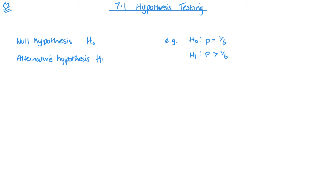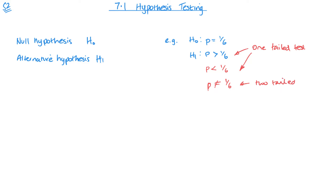This is called a one-tailed test — I'm only looking at one side. If I had p < 1/6, this would also be a one-tailed test. If I'm not sure whether the value could increase or decrease, I write p ≠ 1/6, and this is known as a two-tailed test.